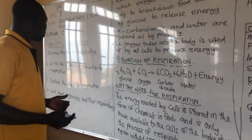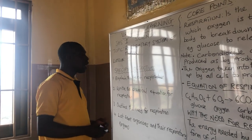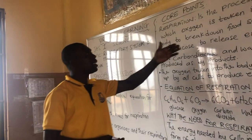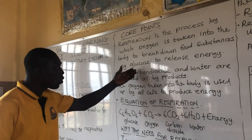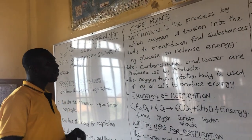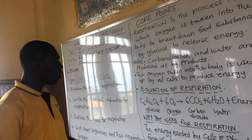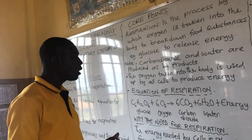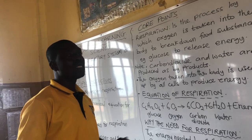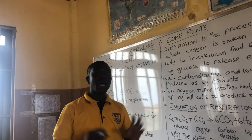I am sure you have been able to put down some key notes today and achieve the objectives for the lesson. We have understood the term respiration — the process by which oxygen is taken into the body to break down food substances such as glucose to release energy, with carbon dioxide and water produced as byproducts. We have seen the equation of respiration, looked at the need for respiration, and examined organisms and their respiratory organs. Until we meet again, continue to stay safe. Bye bye and God bless you for your attention.